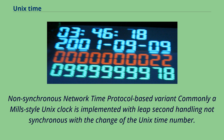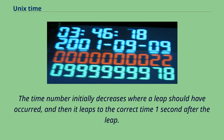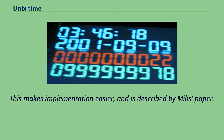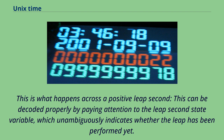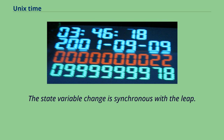Non-synchronous network time protocol-based variant: Commonly a Mill-style Unix clock is implemented with leap second handling not synchronous with the change of the Unix time number. The time number initially decreases where a leap should have occurred, and then it leaps to the correct time one second after the leap. This makes implementation easier, and is described by Mill's paper. This can be decoded properly by paying attention to the leap second state variable, which unambiguously indicates whether the leap has been performed yet. The state variable change is synchronous with the leap.